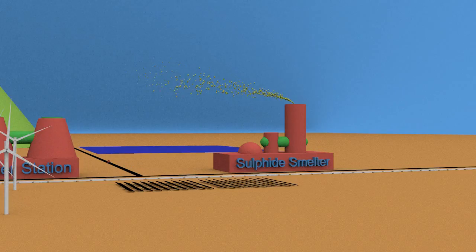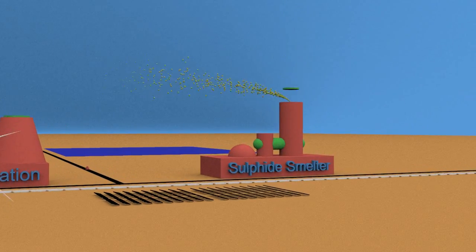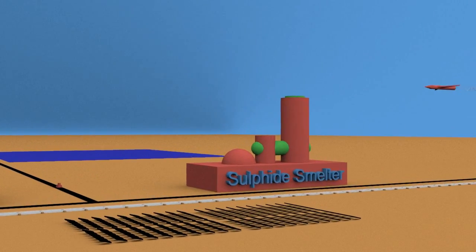A sulfide smelter, again there are solutions for that. The production of lead involves smelting sulfide ore.